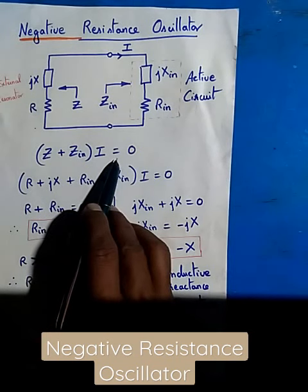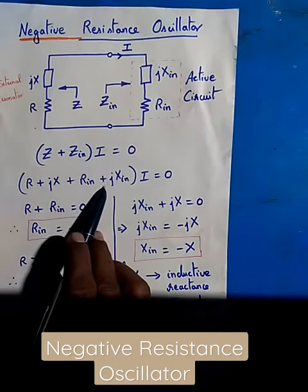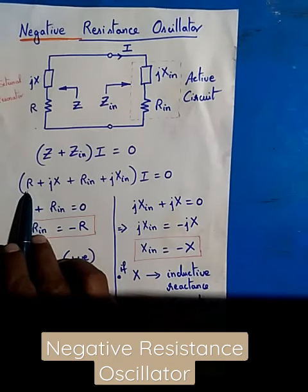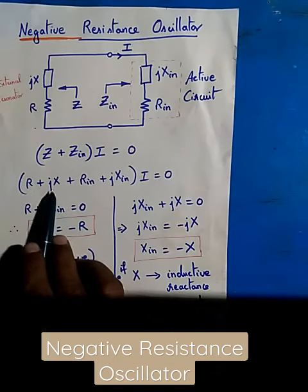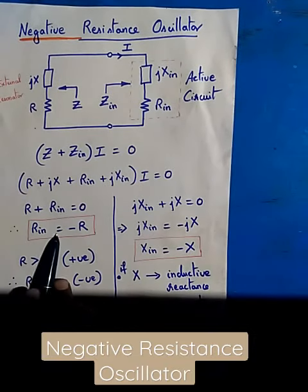Z plus Zin times I should be equal to 0. That means R plus jX plus Rin plus jXin, this value has to be 0. Therefore, R plus Rin should be 0 and jX plus jXin should be 0. So Rin will give you minus R.